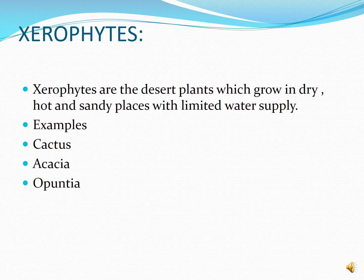Xerophytes are generally desert plants that grow in dry, hot, and sandy places with limited water supply. These plants do not require large amounts of water and can grow with very little. They have long and branched root systems. Their stems contain water-storing tissues. Leaves are modified into spines to reduce transpiration, and they have a thick cuticle. Stomata are sunken, fewer in number, and present on the lower surface. Examples are cactus, acacia, and aloe.